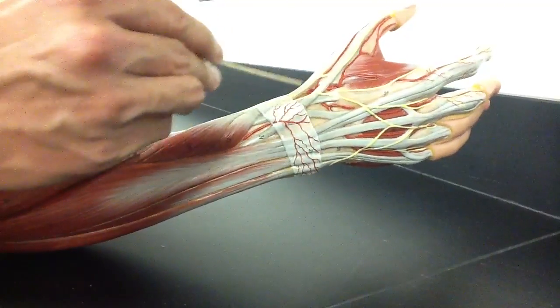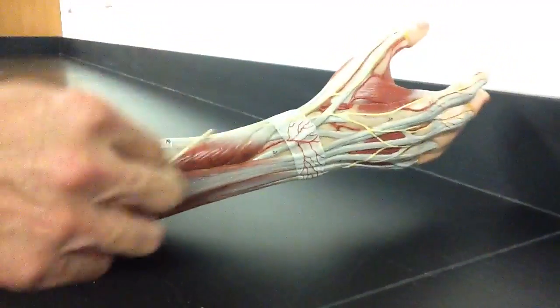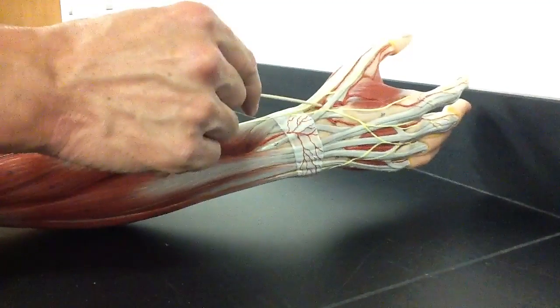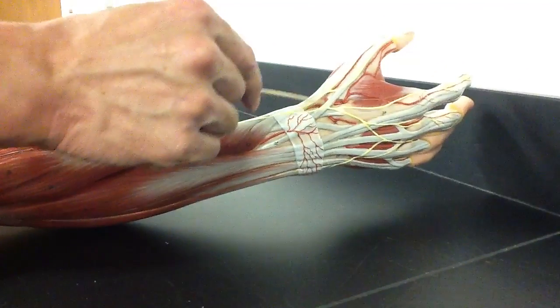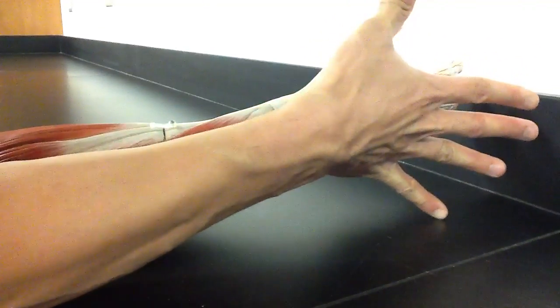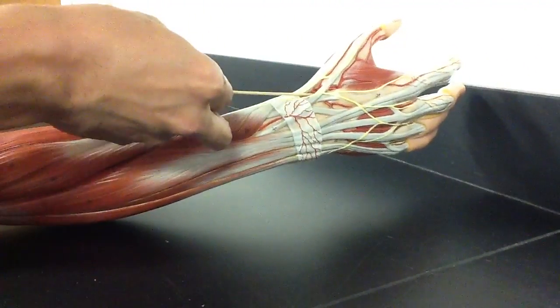Now in between here, this is what we call the anatomical snuff box. These extensor pollicis brevis and extensor pollicis longus make this anatomical snuff box where, you know, if you kind of extend your hand like this, you'll see a little pocket form. That's the anatomical snuff box. So let's review.